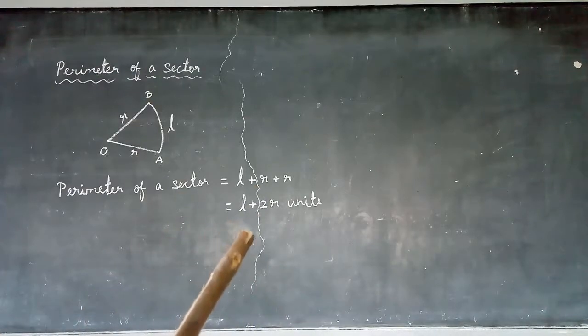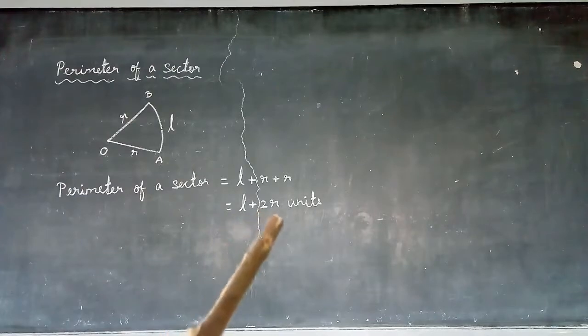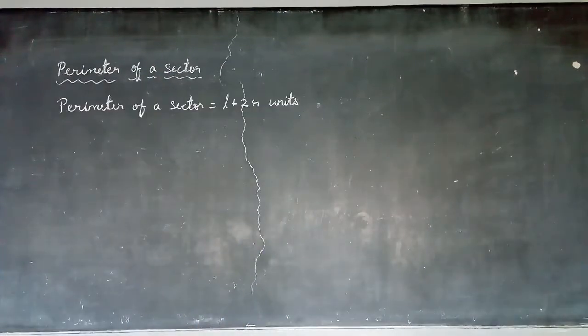The formula for the perimeter of any sector is L plus 2R. So if you know the length of the arc and the radius of the given sector, we can calculate the perimeter.